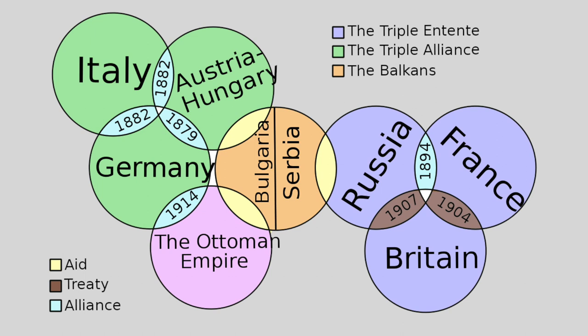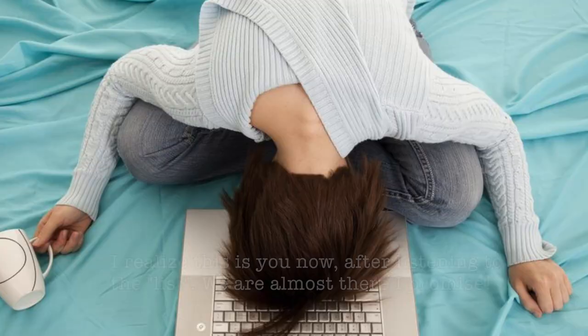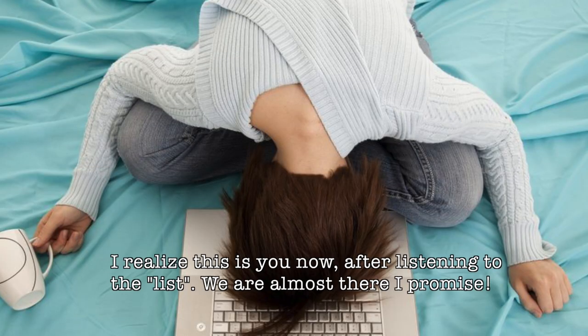In 1894, the Franco-Russian Alliance was started with France and Russia to protect France against Germany and Austria-Hungary. In 1904, the Entente Cordiale was an informal alliance between France and Britain. In 1907, the Anglo-Russian Entente was formed between Britain and Russia. Again in 1907, the Triple Entente formalized an alliance between Russia, France, and Britain to counter the growing power of Germany. And finally, in 1914, the Triple Entente was updated so that none of the three countries would agree to peace with Germany if any of the other members were still at war with them.